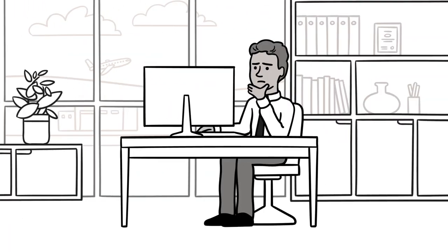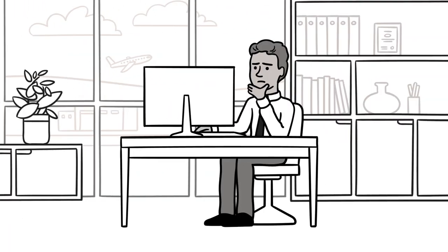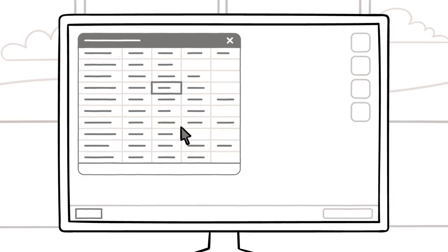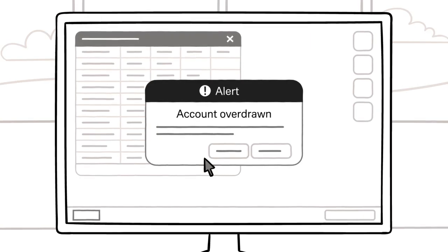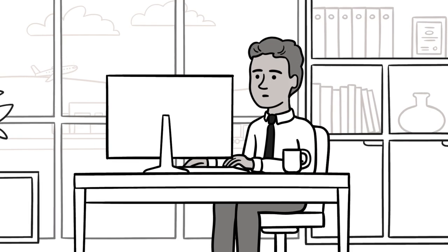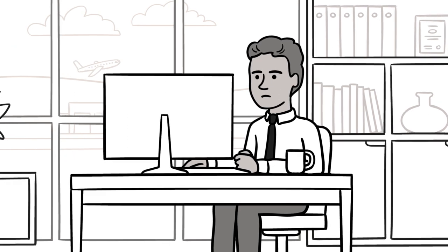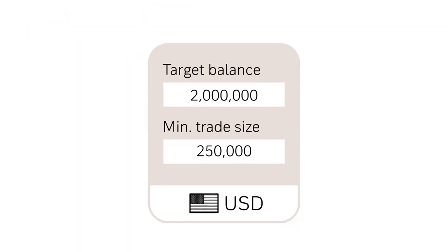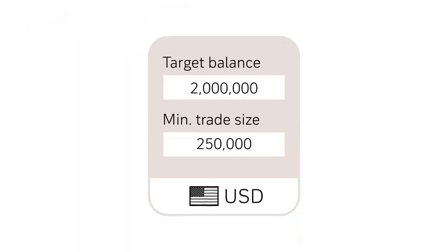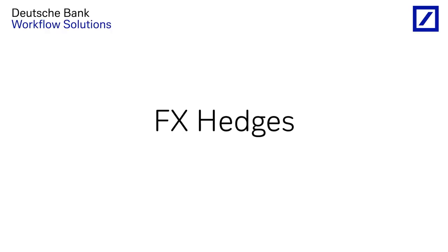However, there are still occasional large cash flows that result in unexpected overdraft costs or negative interest charges. They need manual intervention and require Thomas to keep larger target balances than he would like. These cash flows are the result of FX hedges.